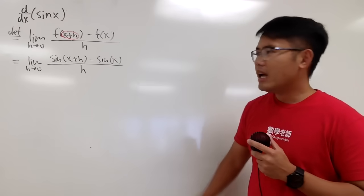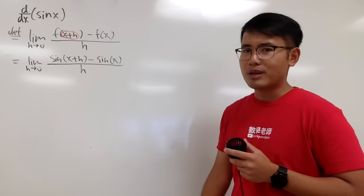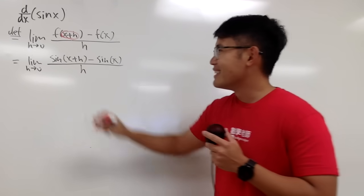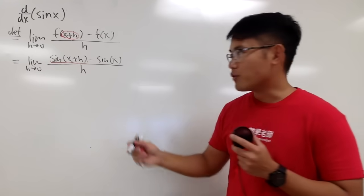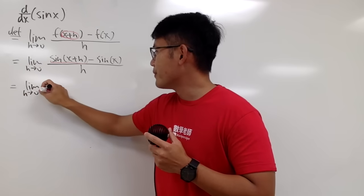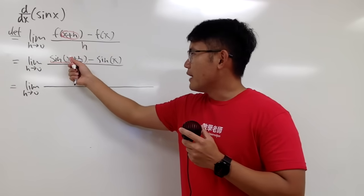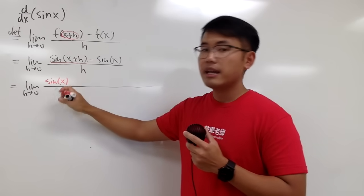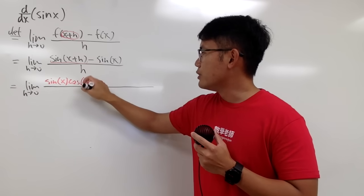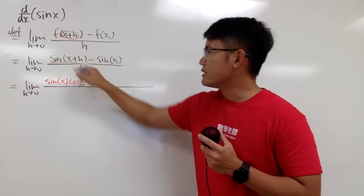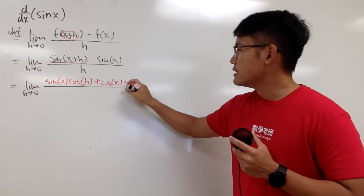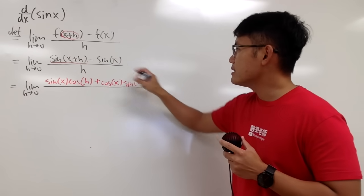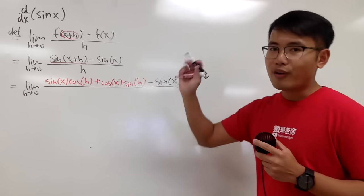If you look at this limit now, there's not much we can do at the moment. But we notice that we have x plus h inside the sine, so we can use the angle sum formula for sine. So we'll apply the angle sum formula: sine of x plus h equals sine of x times cosine of h, plus cosine of x times sine of h. And that's just the angle sum formula for the sine function. We still have minus sine of x, all over h.